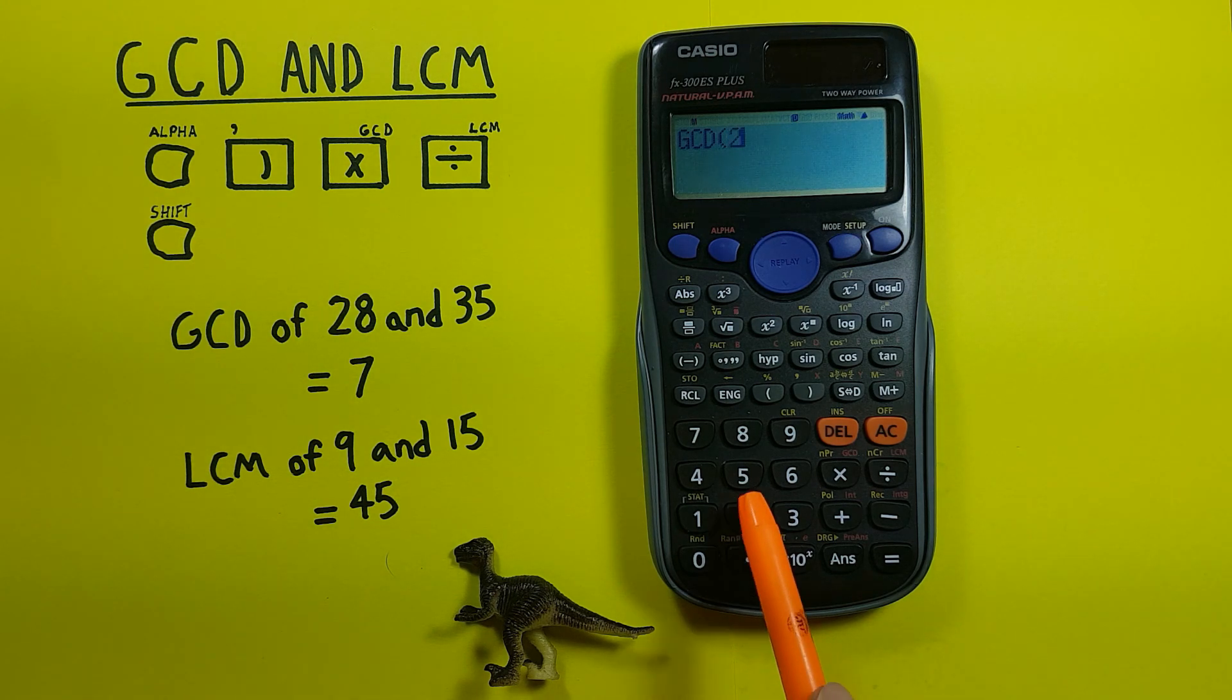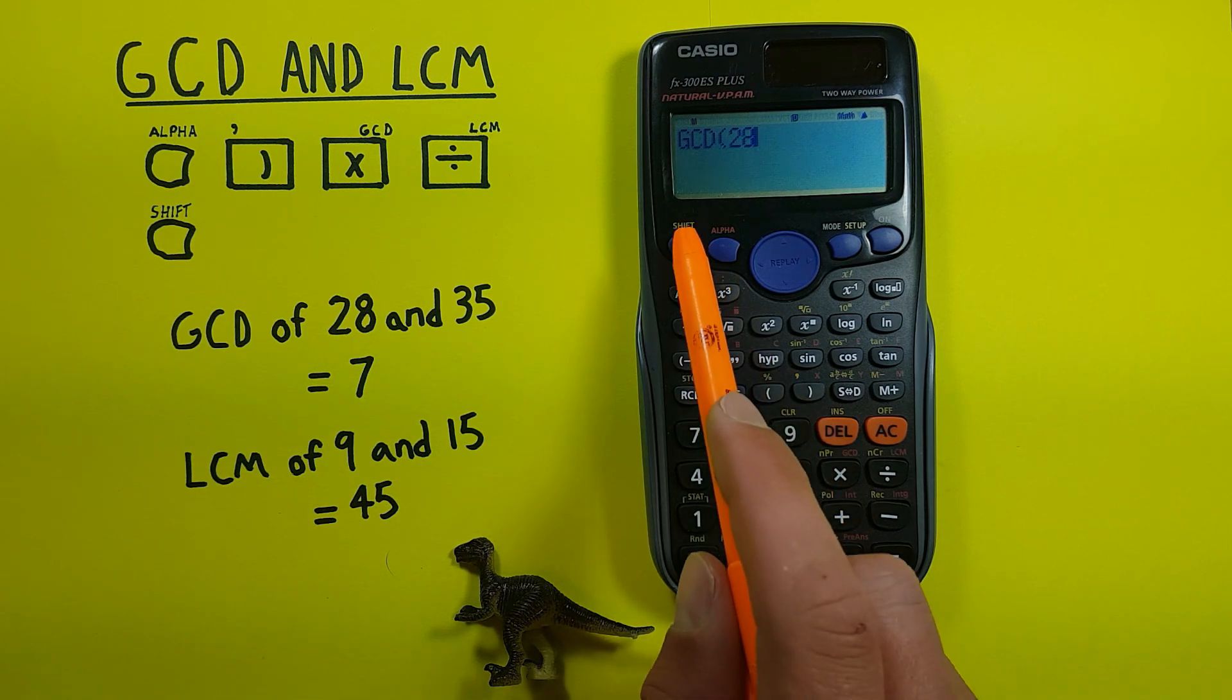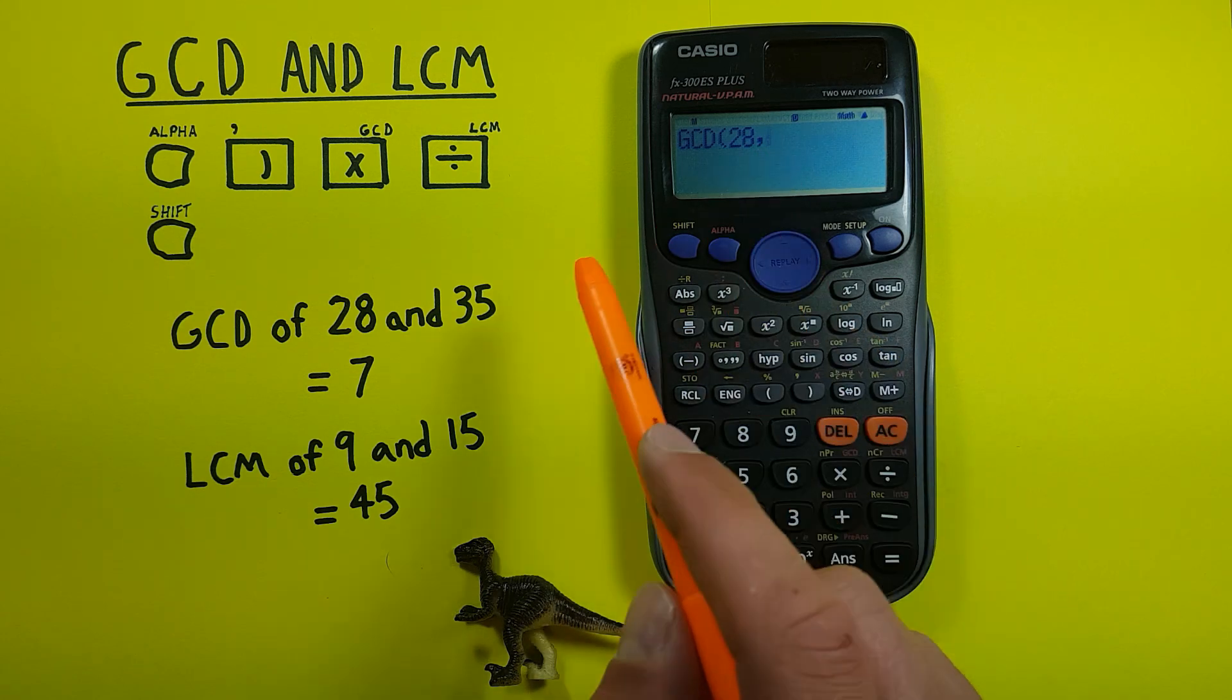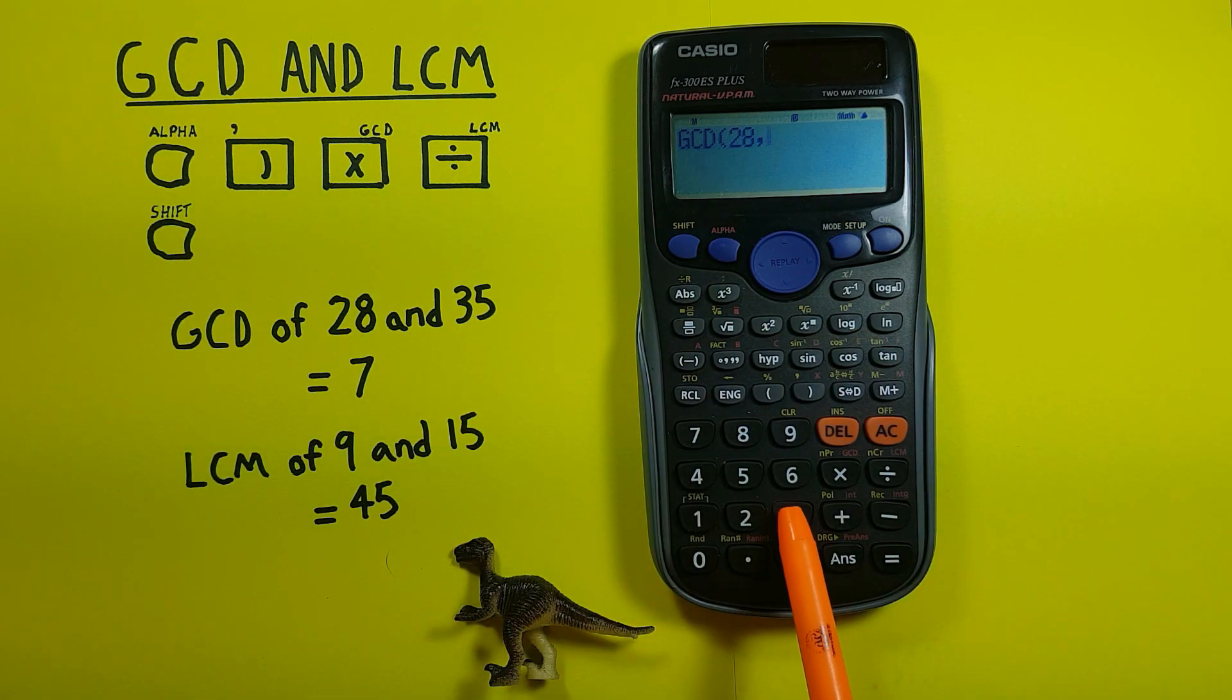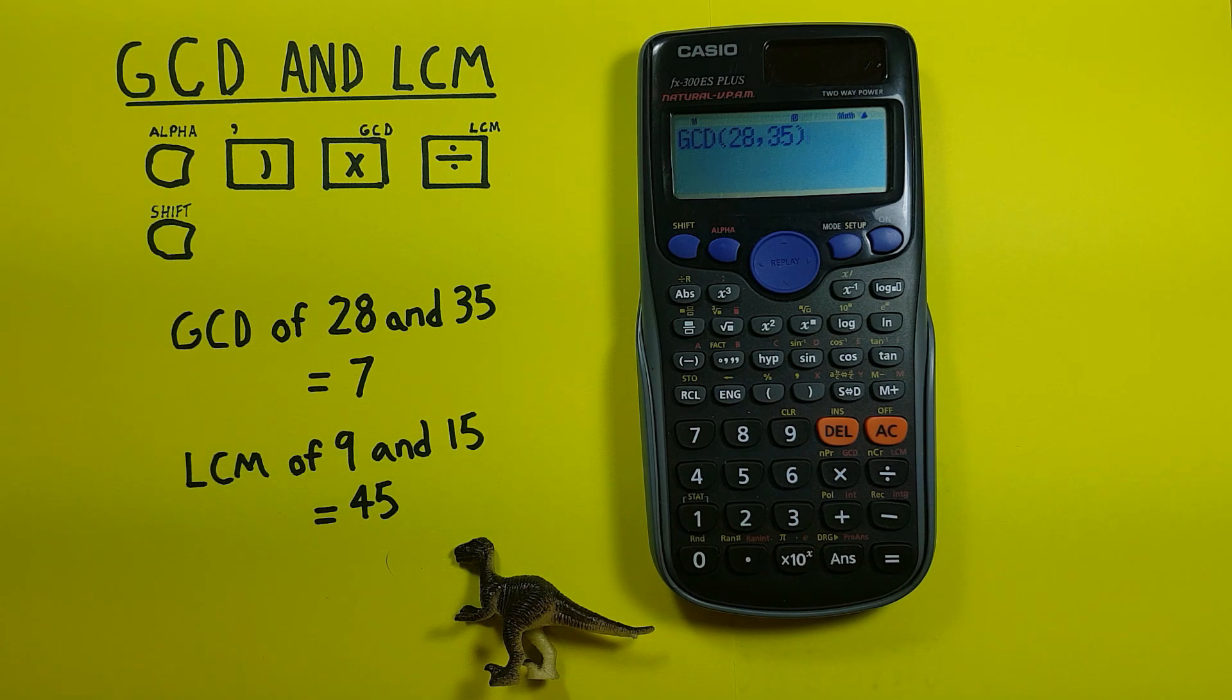So first number is 28 and then we want to differentiate the second number so we go shift right bracket which is a comma. There we go, GCD 28 comma and our next number is 35 and close that bracket and then press equals.